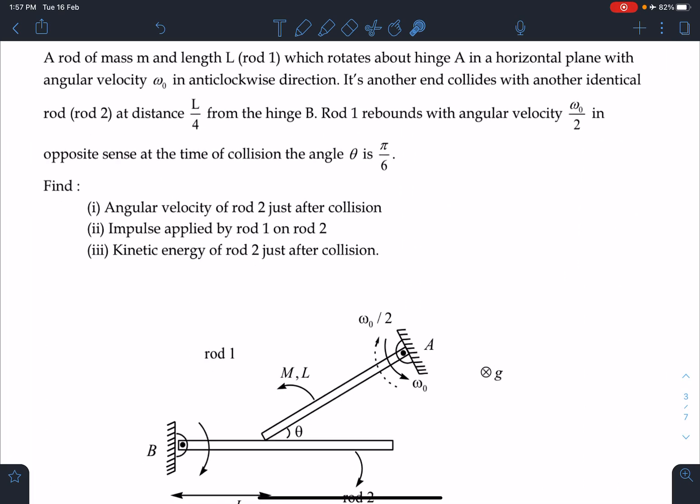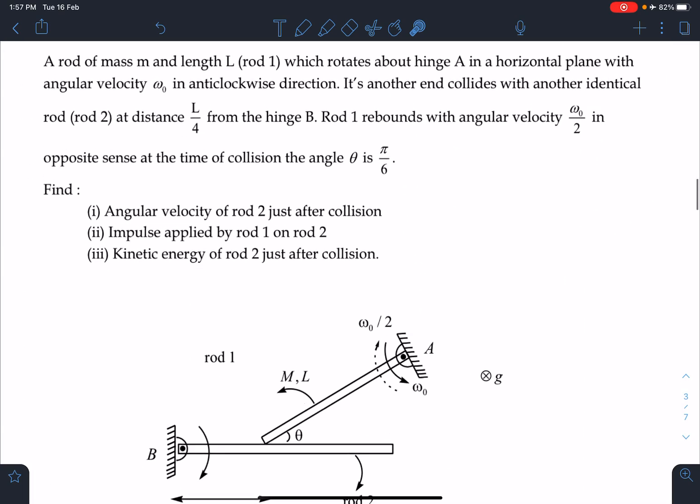Here is the statement of this problem: A rod of mass m and length L (rod 1) rotates about hinge A in a horizontal plane with angular velocity omega naught in anti-clockwise direction. Its other end collides with another identical rod (rod 2) at distance L by 4 from hinge B. Rod 1 rebounds with angular velocity omega naught by 2 in opposite sense at the time of collision. The angle theta is pi by 6. Find: angular velocity of rod 2 just after collision, impulse applied by rod 1 on rod 2, kinetic energy of rod 2 just after collision, and impulse acting at the hinge just after collision.